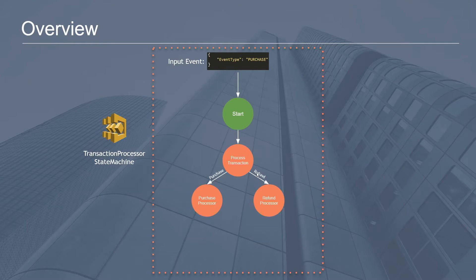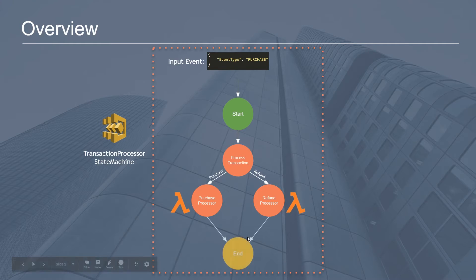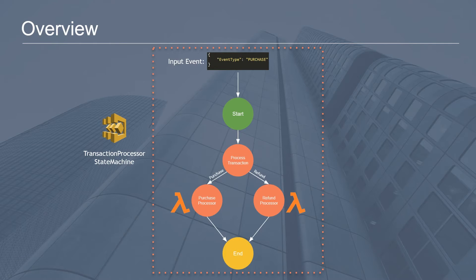Conversely, if the input is a refund type, then we want to go in the right direction, pointing it towards the refund processor. Both of these processors are going to be backed by two independent Lambda functions, which are responsible for parsing the input, processing it, and returning the results back into the state machine. That's just going to be the terminal state. So let's head over to the console.